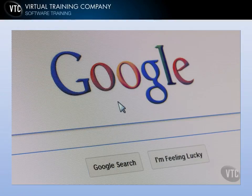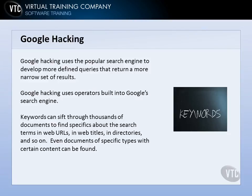The next topic of discussion is Google hacking. Google hacking can help us narrow our internet searches down to a manageable number. It can also go after very specific terms and dig those out from thousands of websites. Google hacking basically comes from using Google itself, the popular search engine, to develop more defined, refined queries that return a more narrow set of results — instead of 50,000, we might just get 1,000, and they will be more relevant to what we're really after.